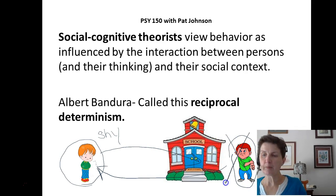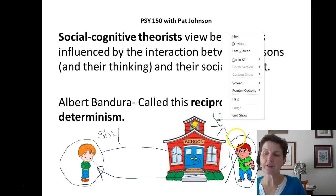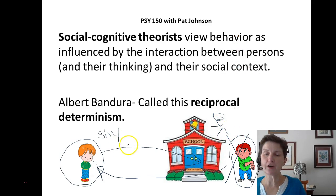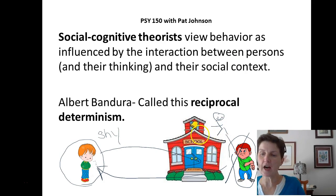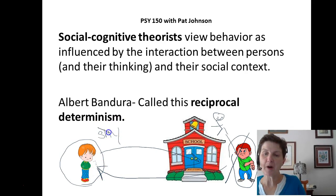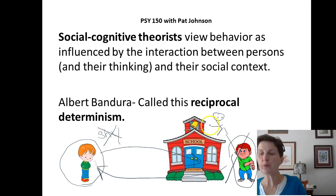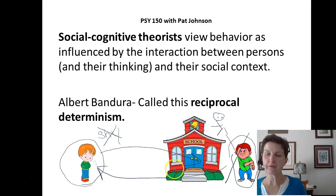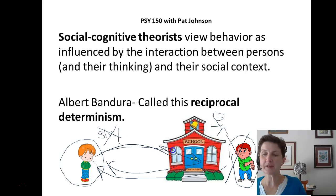Now let's suppose we take away our bully and instead there's a nice kid at the school who's really friendly towards little Johnny. Little Johnny goes to school — he's shy, he's crying — but this nice kid is kind. Well, that environment is going to affect little Johnny, and it's possible that the next day little Johnny won't be so shy. He'll be more outgoing, which will cause other children to be more outgoing towards him, which will affect back and forth. So again, reciprocal determinism is how people and their environments affect each other.